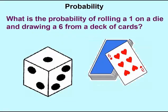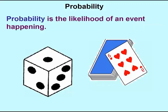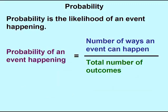We'll begin by giving an example of a problem: what is the probability of rolling a one on a die and drawing a six from a deck of cards? Before we can answer this question, we need to know what probability is. Probability is the likelihood of an event happening. We can calculate probability by taking the number of ways an event can happen and dividing it by the total number of possible outcomes.